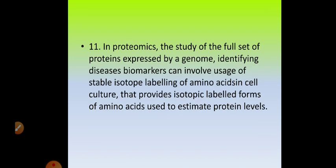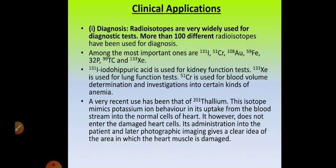In proteomics also we can find application of the isotope tracer technique. The study of the full set of proteins expressed by a genome and identifying disease biomarkers involves the use of stable isotope labeling of amino acids in cell culture. This will help in the study of complete proteins expressed by the genome. These are the various molecular and proteomic applications of tracer technique.